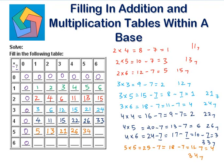5 times 6 is 30. 30 minus 7 is 23, 23 minus 7 is 16, and 16 minus 7 is 9, and 9 minus 7 is 2. Subtracting 7 four times, so this is 42 to the base 7.